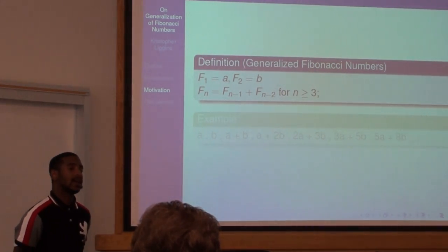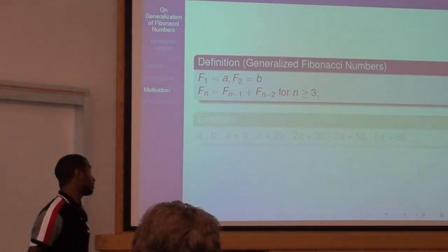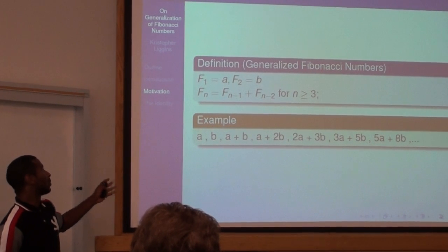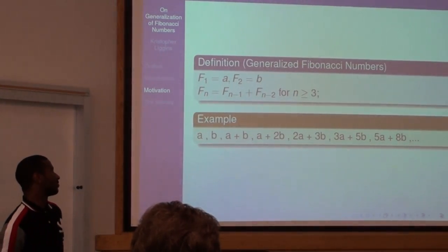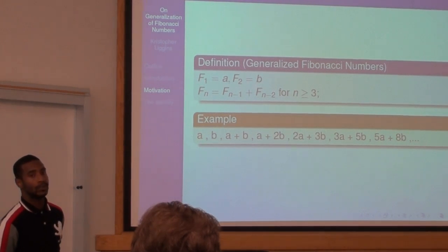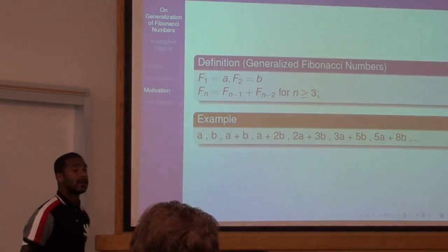For example, if you take F1 to be A and F2 to be B, the sequence will be A, B, A plus B, A plus 2B, 2A plus 3B. If you notice, the coefficients of A and B are Fibonacci numbers.